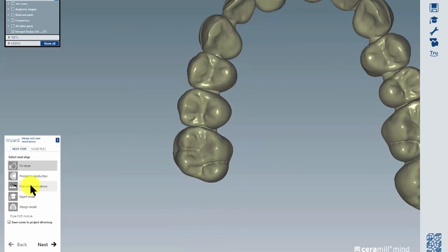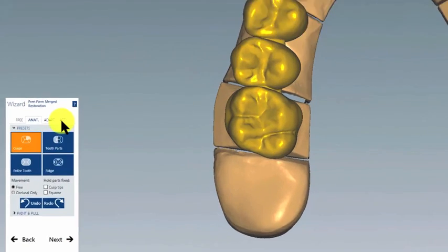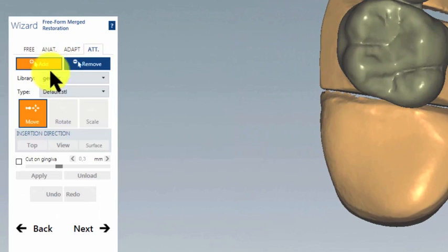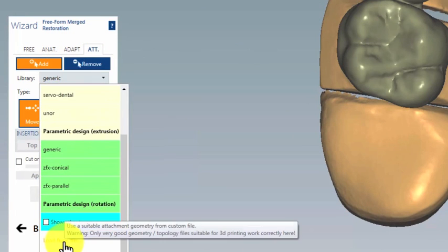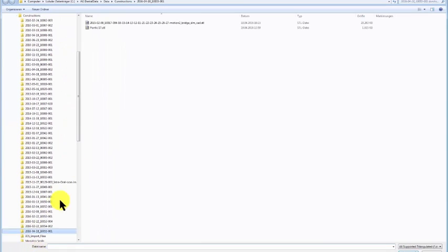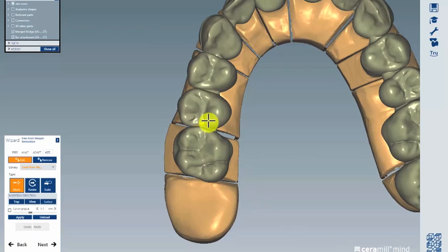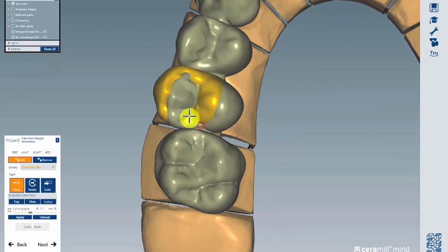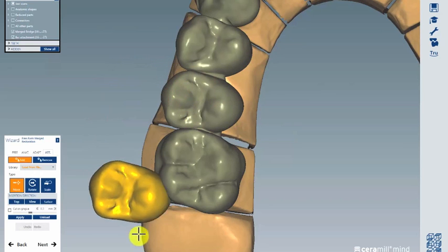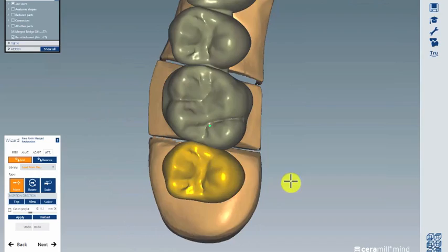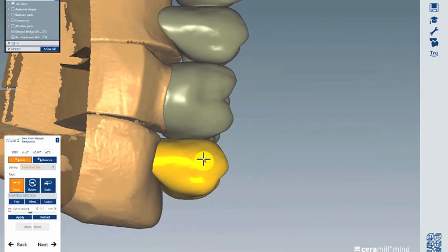Go to Freeform, Restorations, then choose Attachments, Add, In the Library, and Load from File. Click on PONTIC 1.7 and Open. At first you won't see it, but it's hidden here.